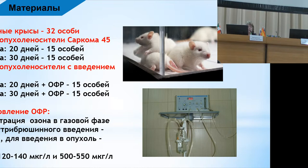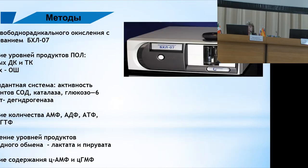The ozonized saline was injected intraperitoneally and intravenously. The ozone concentration in the gas phase for intraperitoneal injection was 0.2 milligrams per liter; for injection into the tumor, 3 milligrams per liter. Please note that in the paper the numbers are cited in micrograms.